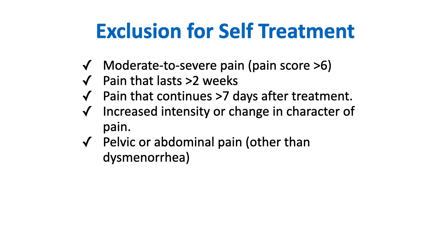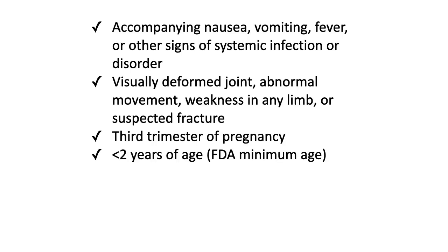Other exclusions from self-treatment include increased intensity or change in character of pain, and pelvic or abdominal pain other than dysmenorrhea — as this may indicate UTI or an ulcer where simple analgesics could worsen the condition. If there are accompanying nausea, vomiting, fever, or other signs of systemic infection, self-treatment should be excluded. Visually deformed joints or suspected fracture, and abnormal movement or weakness in any limb also warrant medical referral.